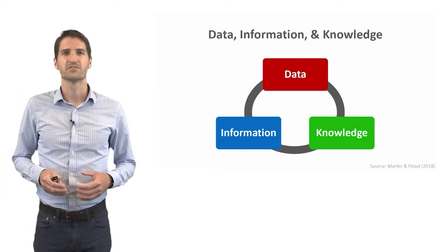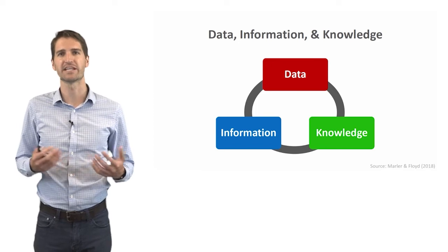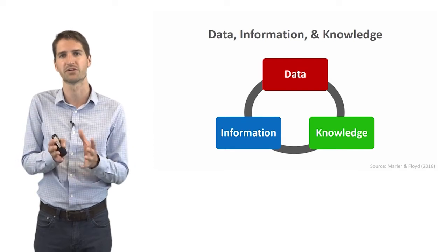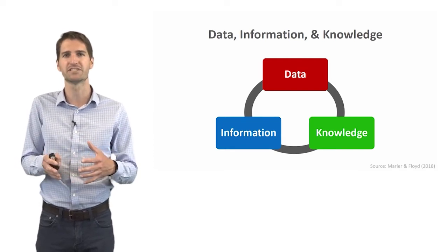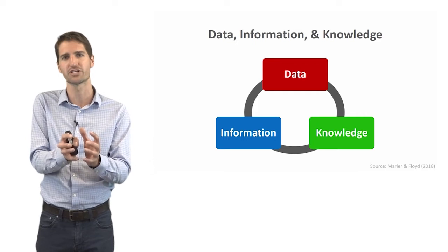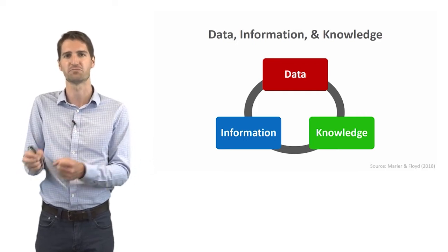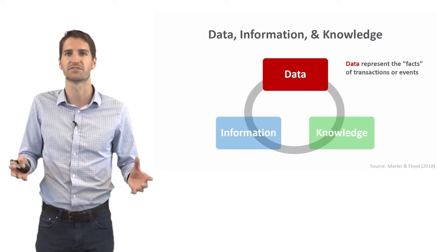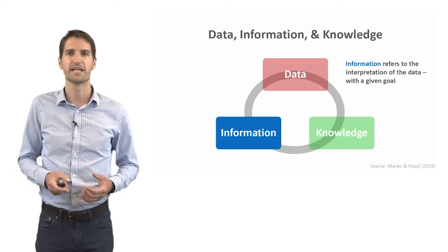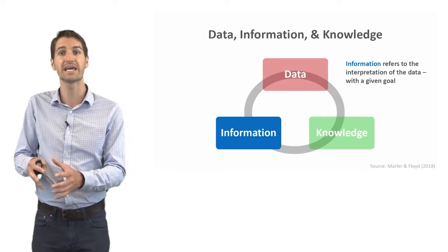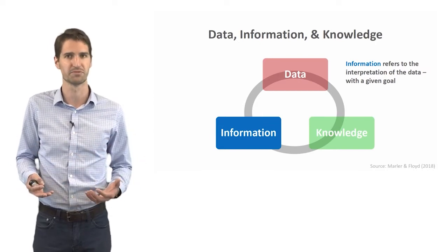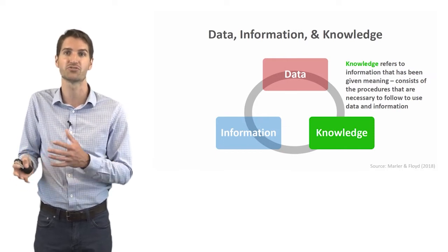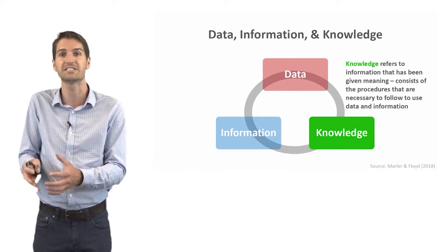So next we can distinguish between these concepts of data, information, and knowledge. And we tend to use these interchangeably, but actually there are some technical distinctions between what we consider data versus information and knowledge. You can think of data being kind of the most basic version, then information being built upon data, and then knowledge being built upon information. So again, when we talk about data, as we discussed before, it represents the facts of transactions or events. Now information on the other hand refers to the interpretation of the data with a particular or a given goal in mind. And then finally, knowledge refers to information that has been given meaning. So this consists of procedures that are necessary to follow to use the data and information.